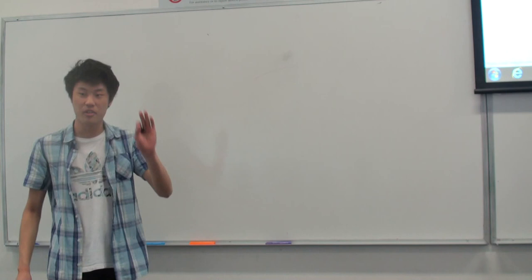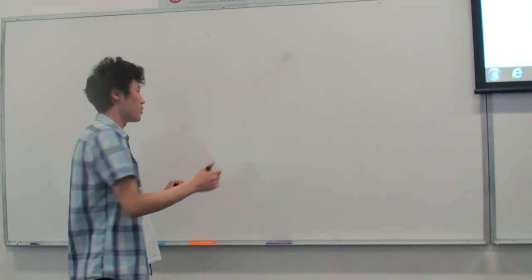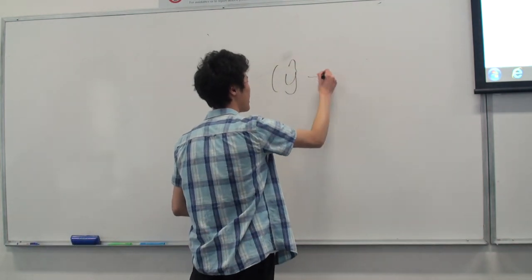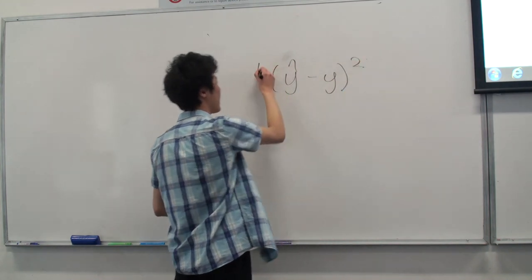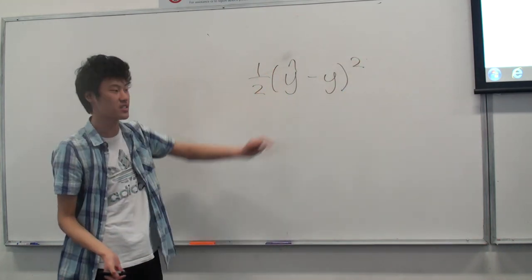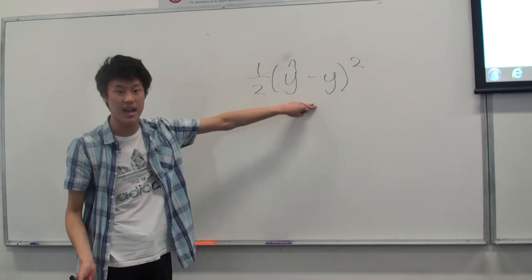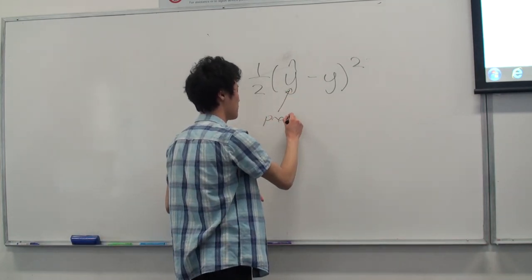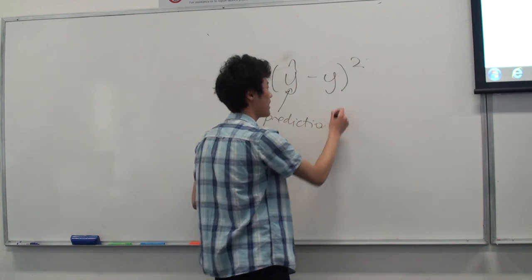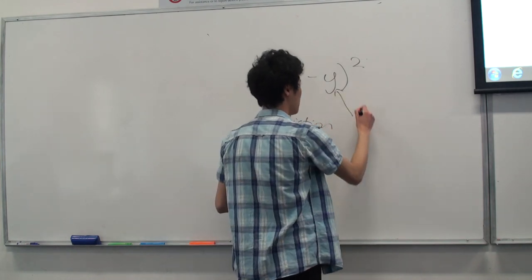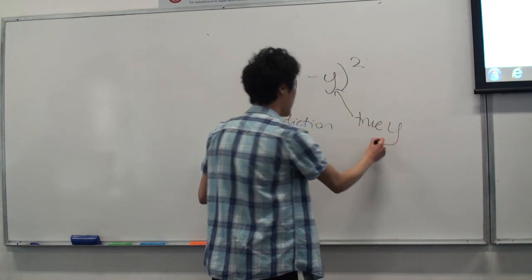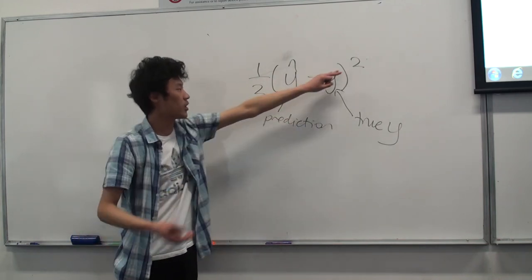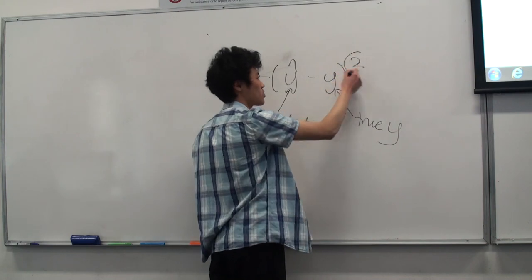Remember from last time, the cost function was (ŷ minus y) squared over 2. ŷ is the prediction and y is your true value. What this is trying to say is that if the difference between them is big, you want to penalize it even bigger — that's why you have the square.